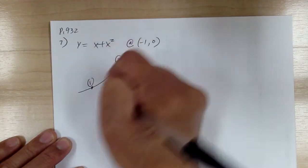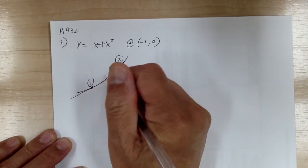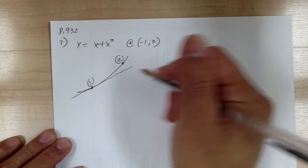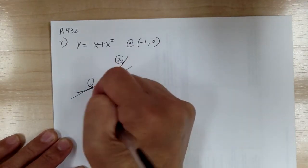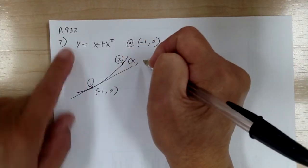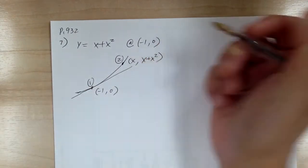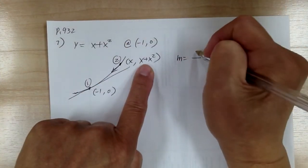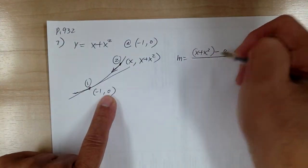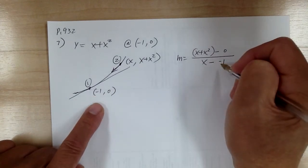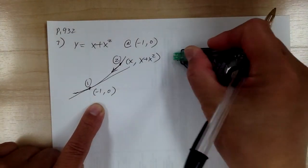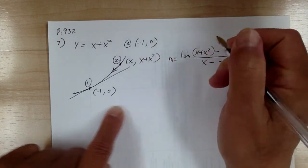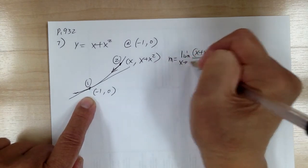Here's your point 1, point 2. You're looking for the equation of this line. The problem asks you to graph the curve and the tangent line — you can do that on your own. So you have negative 1, 0, and this point is going to be x and y, where y is x plus x squared. So slope equals the limit — y2 minus y1 over x2 minus x1 — and x2 approaches to x1, so x approaches to negative 1.